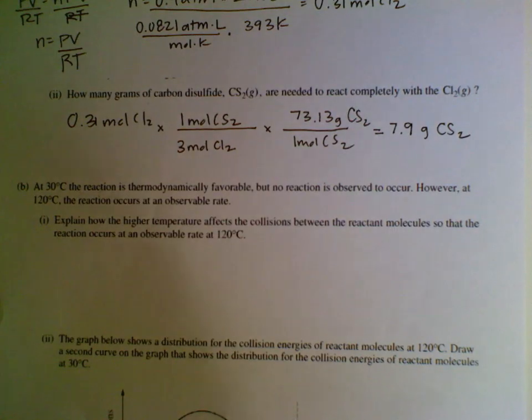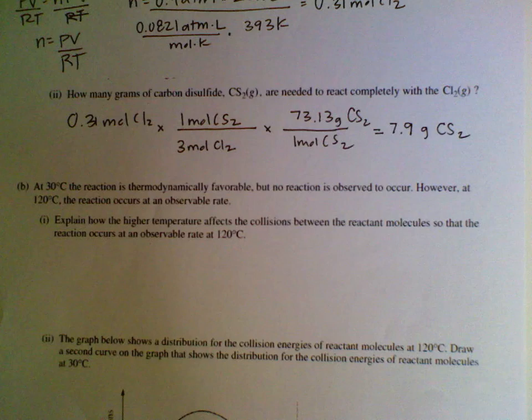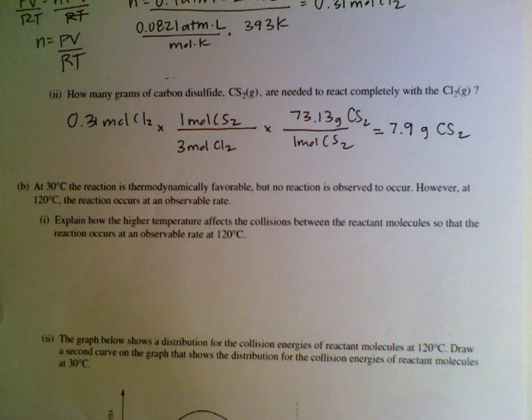Moving on to B. It says at 30 degrees Celsius, the reaction is thermodynamically favorable. So if you remember, that's a negative delta G, but no reaction is observed to occur. However, at 120, the reaction occurs at an observable rate. It says explain how the higher temperature affects the collisions between the reactant molecules so the reaction occurs at an observable rate at 120 degrees Celsius. You know that if the temperature is higher, the particles are moving faster. So they are able to collide with each other harder, which means that they have more energy overall to react. So that's what we need to discuss in this problem.